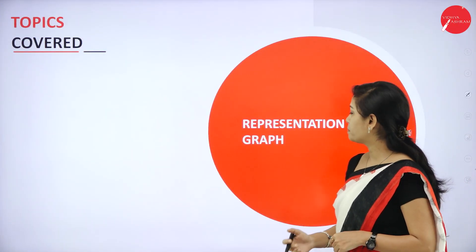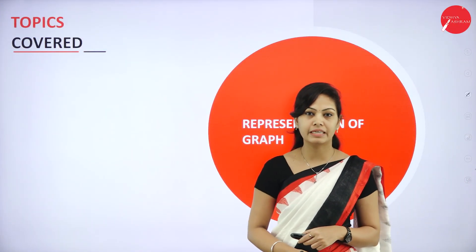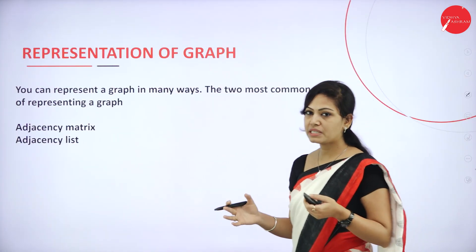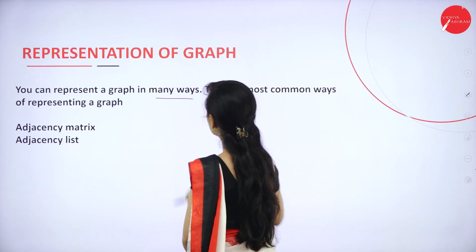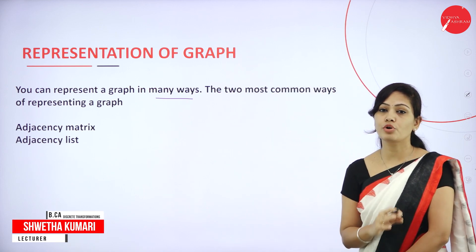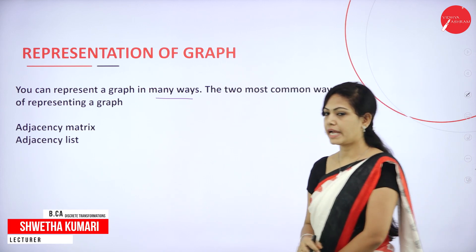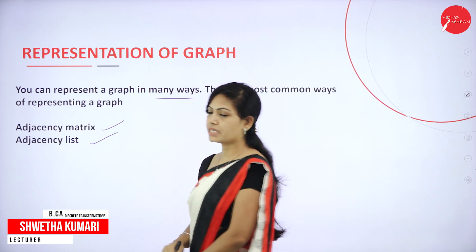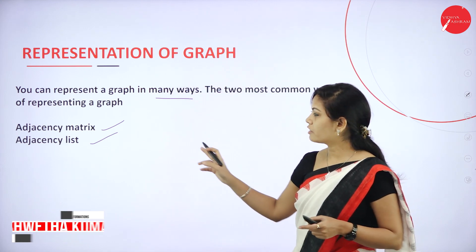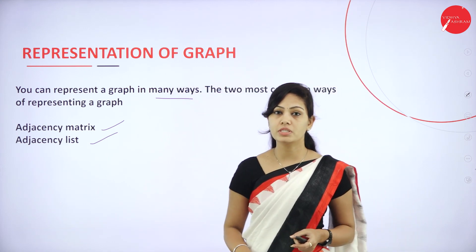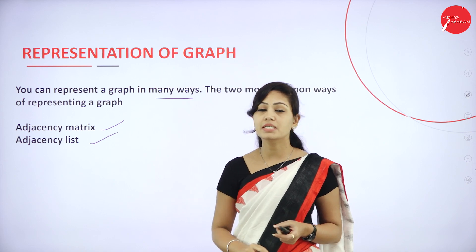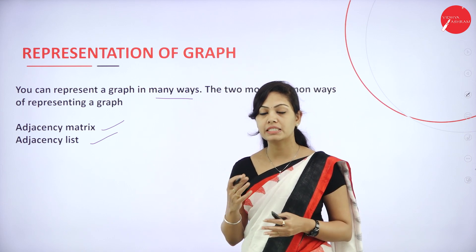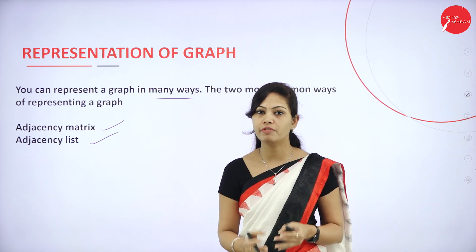So how do we represent a graph? You can represent a graph in many ways. The two most common ways are adjacency matrix and adjacency list. There will definitely be a problem on this topic — either finding the adjacency matrix or the adjacency list for a given graph.